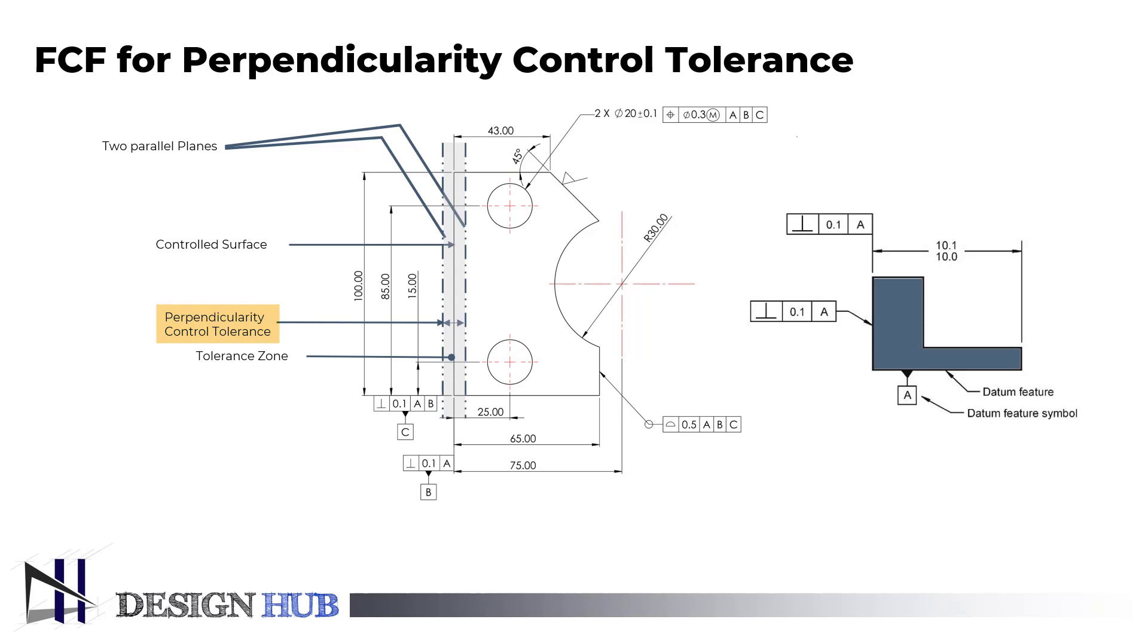Now, let's see how the placement of the feature control frame is done. It can either point at the surface or be connected to the extension line that extends from it in order to apply a perpendicularity control. A perpendicularity tolerance is applied to the entire surface. The entire surface must be contained between two parallel 0.1 millimeters apart planes. The planes are pointed at datum A at a 90 degrees angle. A datum feature symbol designates the datum feature that was used to establish the datum. As we can see here, it is used to define the range we can work with by giving a tolerance of 0.1 millimeters. So, the height of the part with respect to datum A and B will be 99.9 millimeters to 100.1 millimeters. Same over here, perpendicularity tolerance is used to define the length of the part. The length of the part with respect to datum B can vary from 74.9 millimeters to 75.1 millimeters.